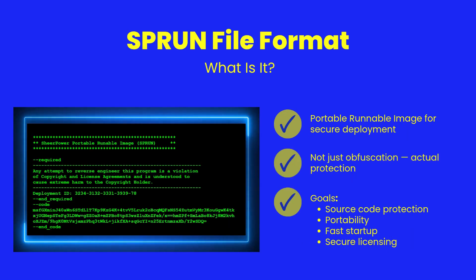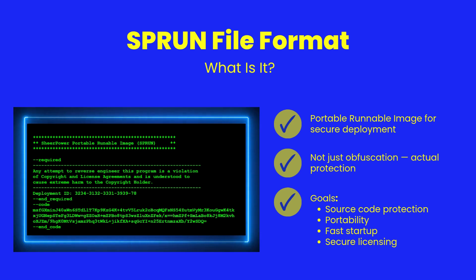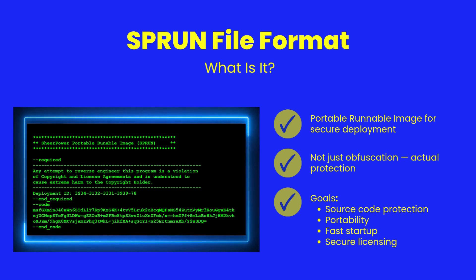The .sp-run file is ShearPower's portable, runnable image format. It goes far beyond simple obfuscation — it's a secure container for your application, designed for performance and safe commercial distribution. Its core goals: protect your source code, ensure portable deployment, speed up startup, and enable secure, customizable licensing mechanisms.